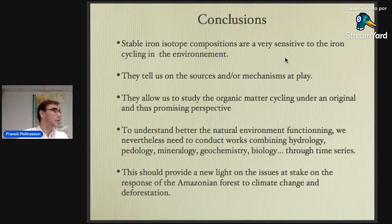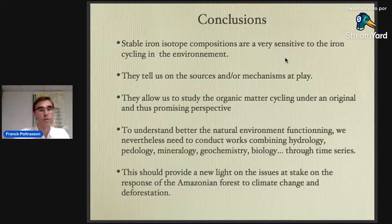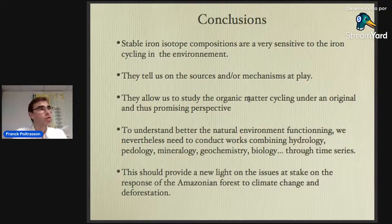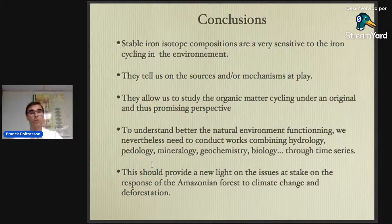In conclusion: stable iron isotope compositions are very sensitive to iron cycling in the environment, and they can tell us about sources and mechanisms at play. They allow us to study organic matter cycling under an original and promising perspective. To better understand the natural environment's functioning, we need to conduct works combining hydrology, pedology, mineralogy, geochemistry, and biology through time series. This should provide new insight into the issues at stake regarding the response of the Amazonian forest to climate change and deforestation, as shown by the preliminary examples presented here. Thank you for your attention.